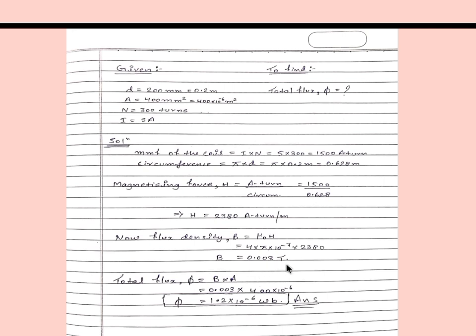Now total flux phi equals flux density times area. Flux density is 0.03 tesla and area is 400 times 10 to the power minus 6 m squared, so total flux phi equals 1.2 times 10 to the power minus 6 weber. Thank you for watching — please share and subscribe for more, and keep supporting.